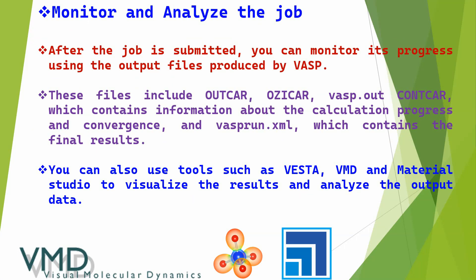Finally, monitor and analyze the job. After the job is submitted, you can monitor its progress using the output files produced by VASP. These files include OUTCAR, OSZICAR, VASPOUT, and CONTCAR, which contain information about the calculation progress and convergence. You can also use tools such as VESTA, VMD, or Materials Studio to visualize the results and analyze the output data.